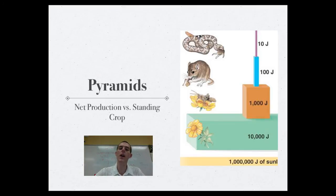There's also a standing crop pyramid, which talks about the actual biomass of a section of the trophic pyramid. So this would be like, if you took all the plants in a given area, dried them and weighed them, what would be their weight in grams? And then if you did the same for the grasshoppers and the mouse and the snakes, what is the standing crop, the amount of biomass available?